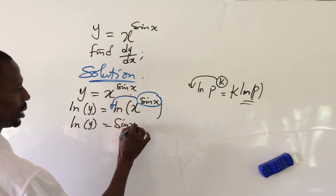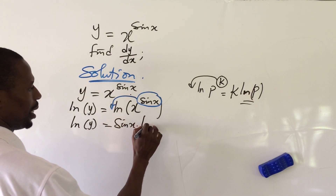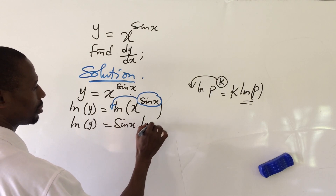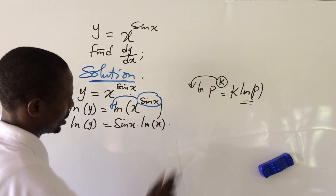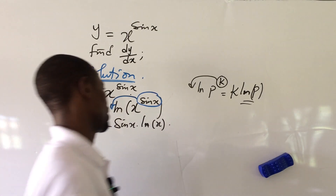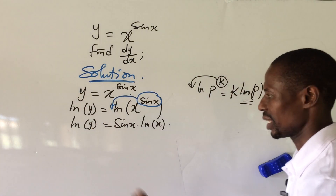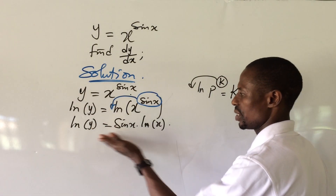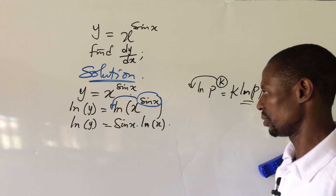Applying the log power rule gives us: ln(y) equals sin(x) · ln(x). It is at this point we can now differentiate the function.